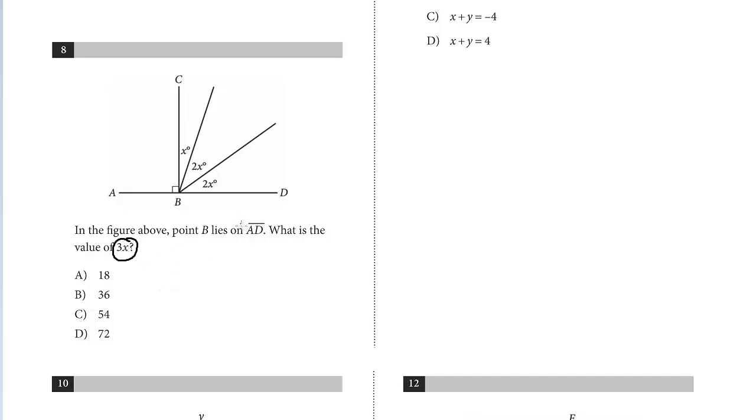We see that this is a 90 degree angle, and so this must be 90 as well. It's a line, and we know that all the x's together...